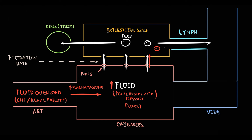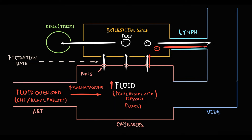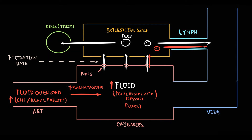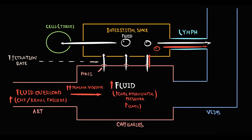Initially, lymphatic vessels remove all excess fluid from the interstitial space. But the more severe heart failure or renal failure becomes, the higher the plasma volume, the higher the hydrostatic pressure inside the capillaries, and thereby the greater the fluid entering the interstitial space. At some point, fluid income from capillaries to the interstitial space will exceed lymphatic drainage, so fluid accumulates in the interstitium, causing edema.